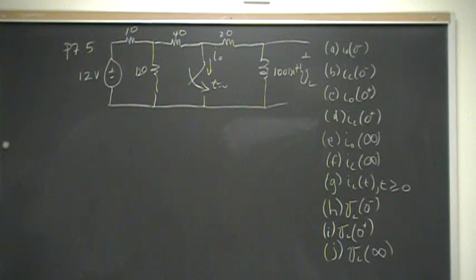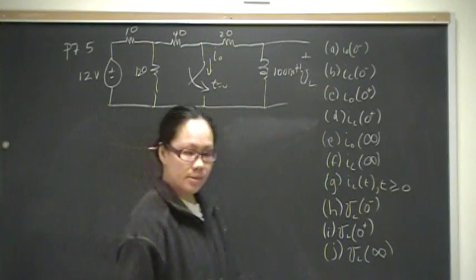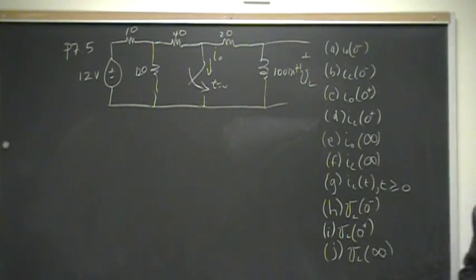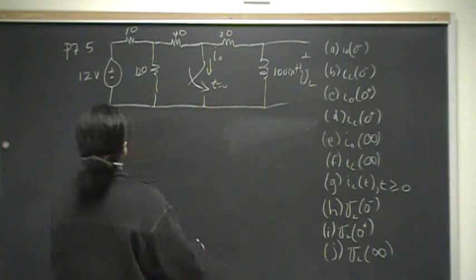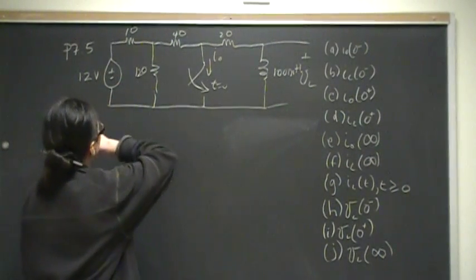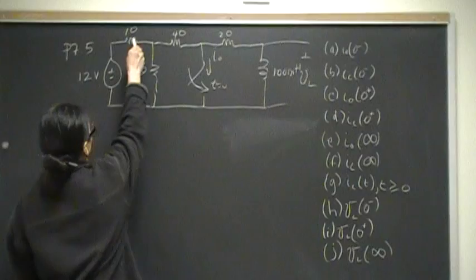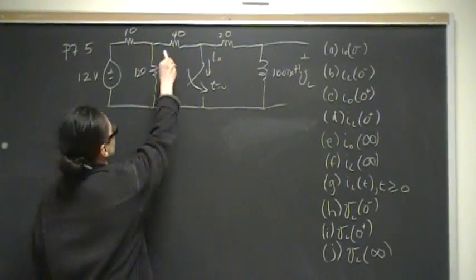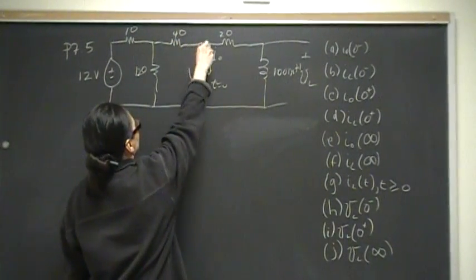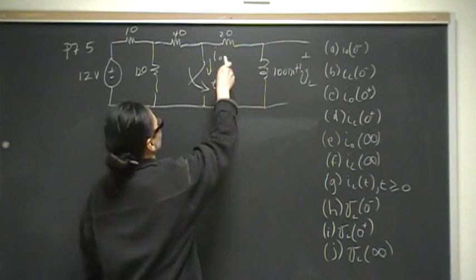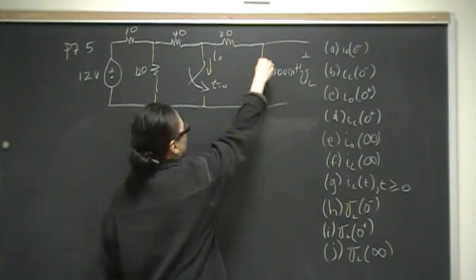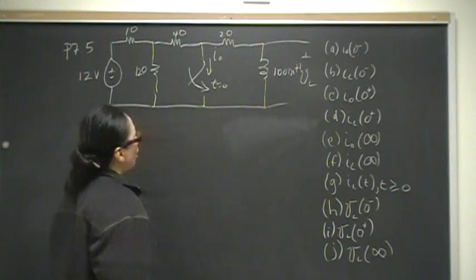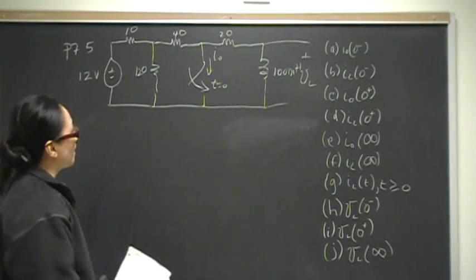This is problem number five from chapter seven on natural responses of RL and RC circuits. We have a 12 volt source in series with a 10 ohm, 120 ohm, 40 ohm resistor, and a switch that's open at time zero. We also have 20 ohms, a 100 mH inductor, and we are looking for a whole bunch of stuff.